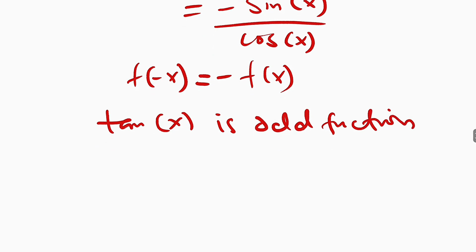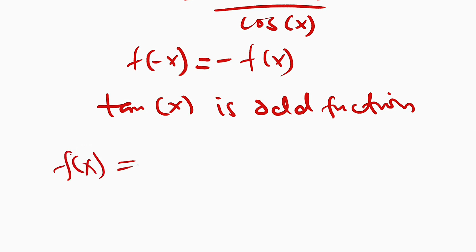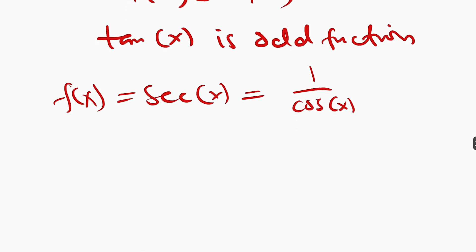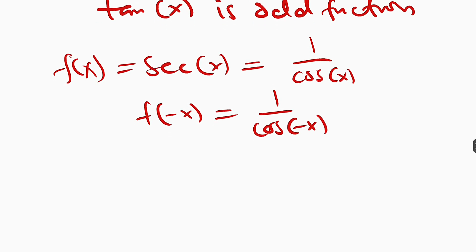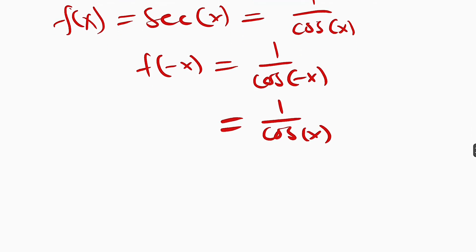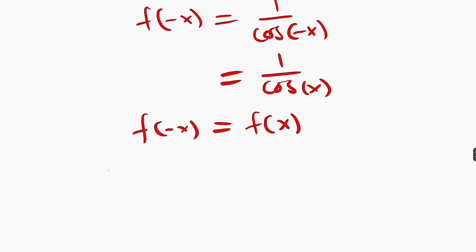Now let's test for secant x. You know secant x is the same thing as 1 over cos x. So if we substitute x with negative x, we have 1 over cos of negative x. And cos of negative x is the same thing as cos x. So this is 1 divided by cos x, which is just like the original function f of x. Therefore f of negative x is the same thing as f of x, and we conclude by saying that secant x is an even function.